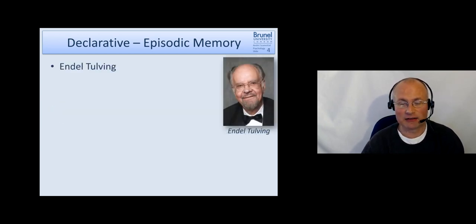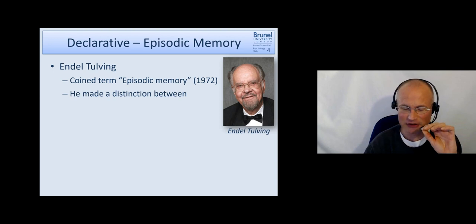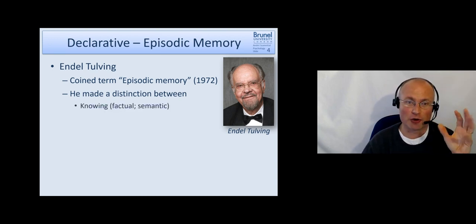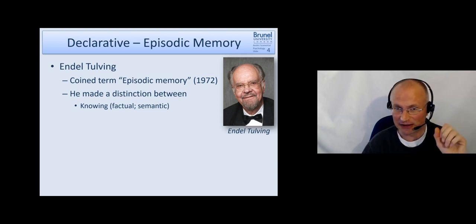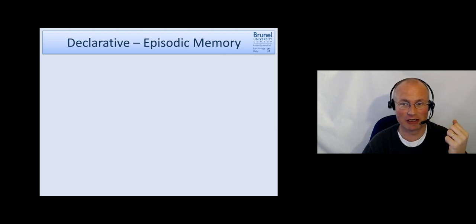Endel Tulving is the memory researcher in that area and he coined the term episodic memory in the 1970s. He made the distinction between knowing something, which is referring to the factual and semantic memory, and remembering something, which he described as a feeling that is located in the past. This is episodic memory. So knowledge versus remembering your own life.